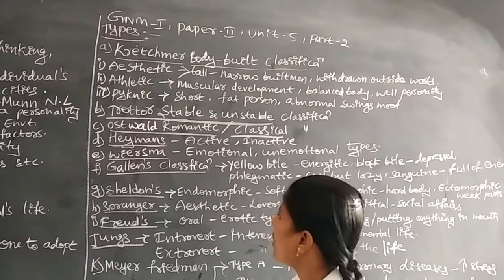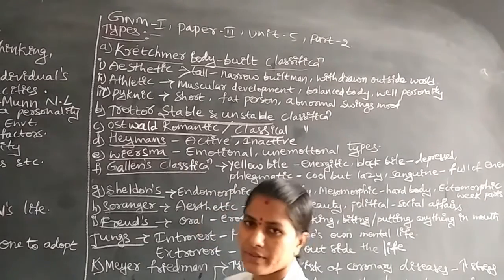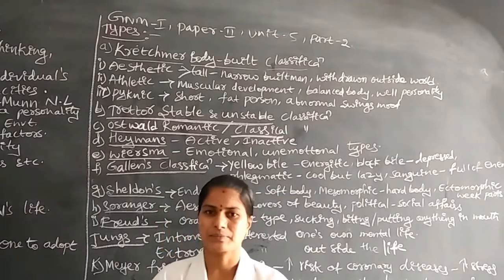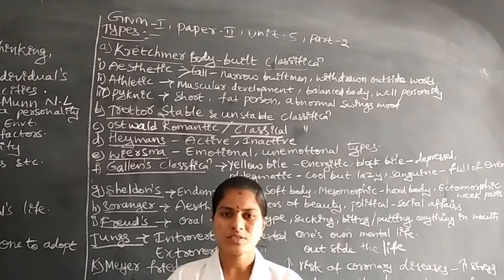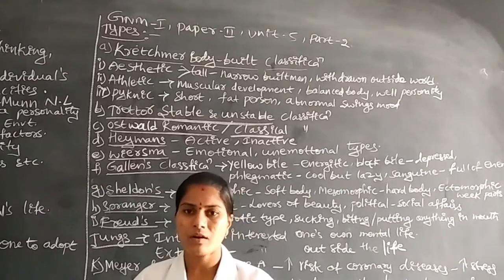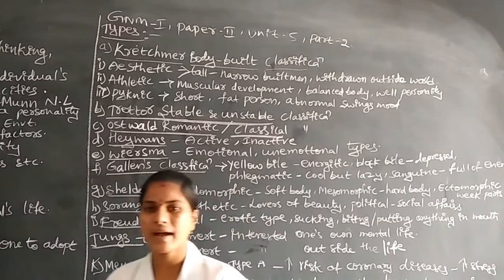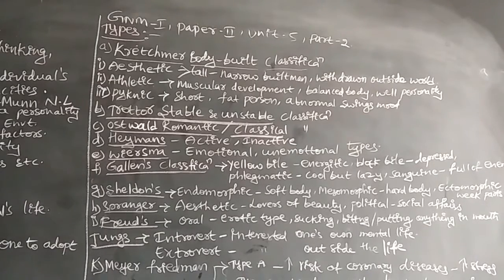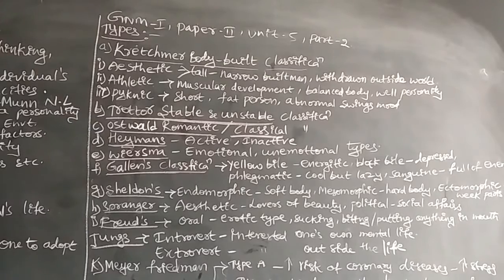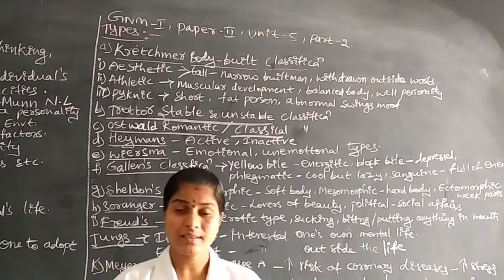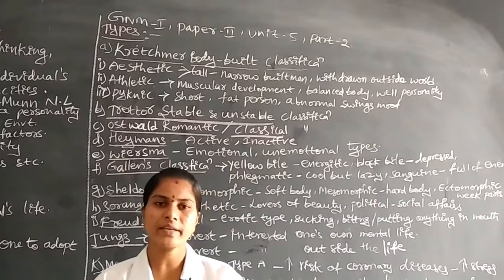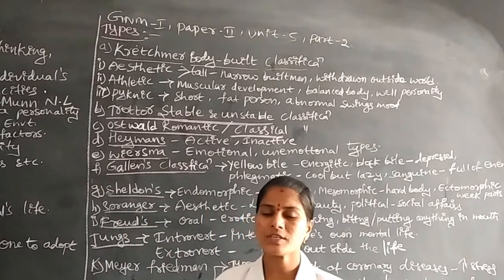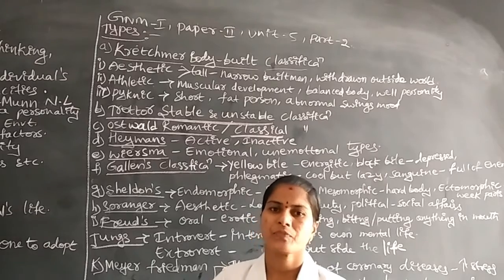Next is Ostwald's Romantic and Classical Classification. In this classification, individuals have romantic feelings, romantic thoughts, and romantic ideas. They always have classical thoughts, classical ideas, classical behavior, and classical emotions. This type of personality is called the romantic personality.